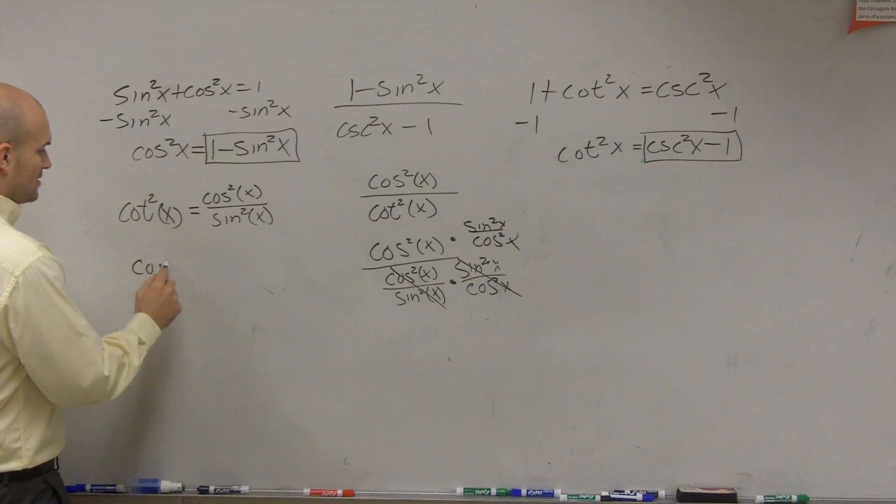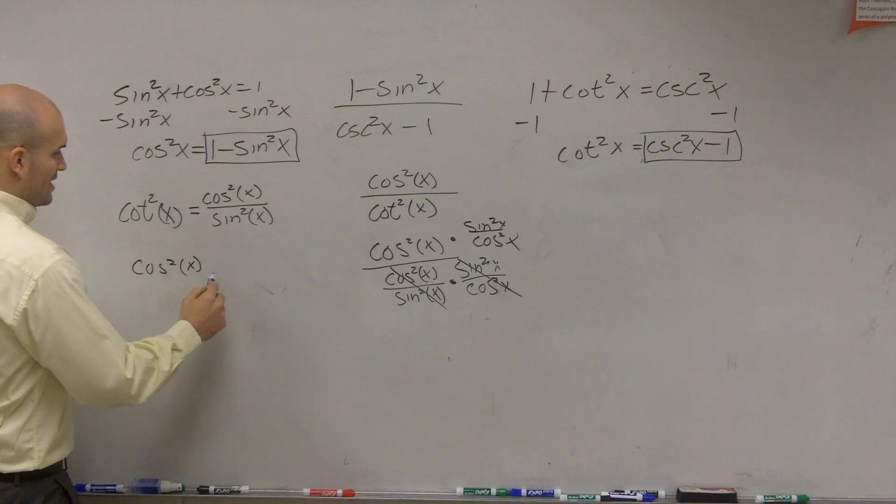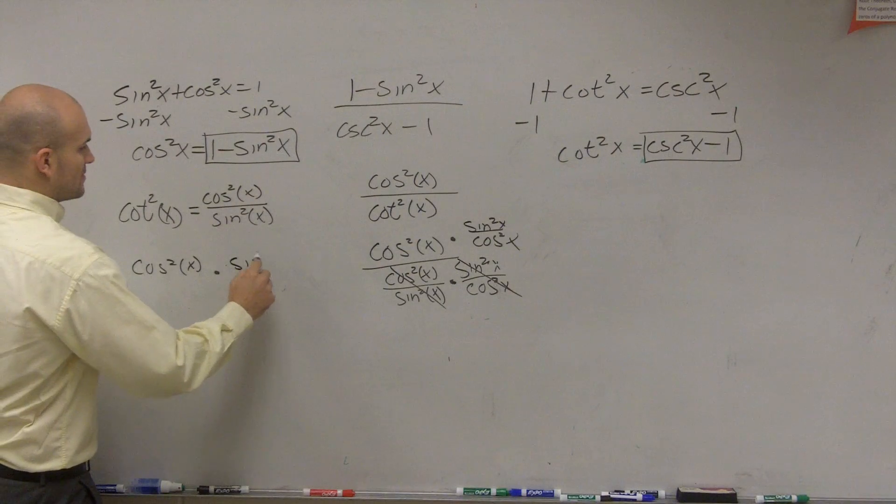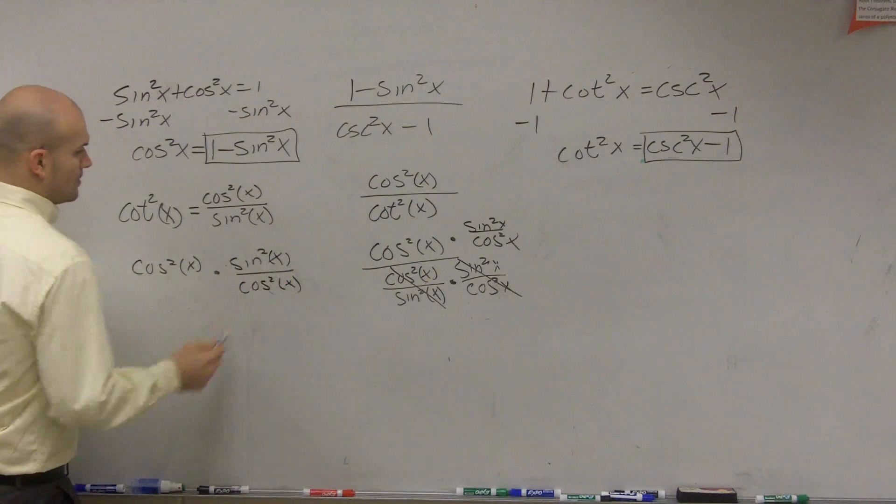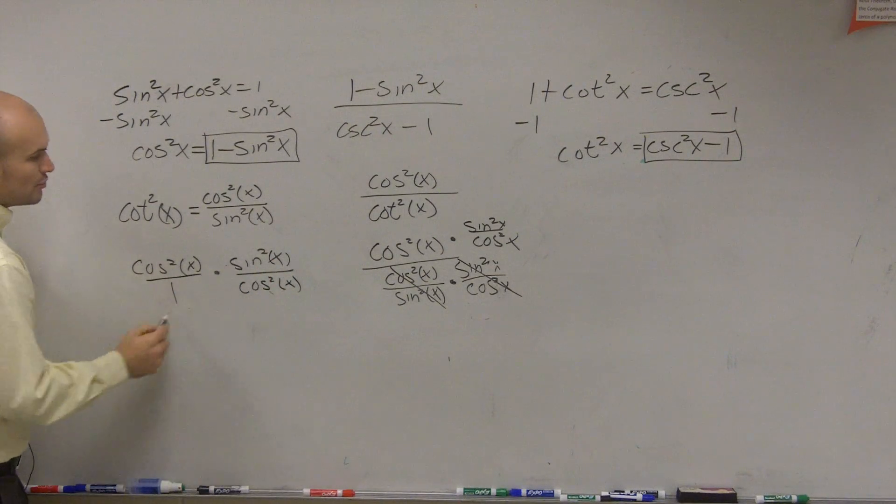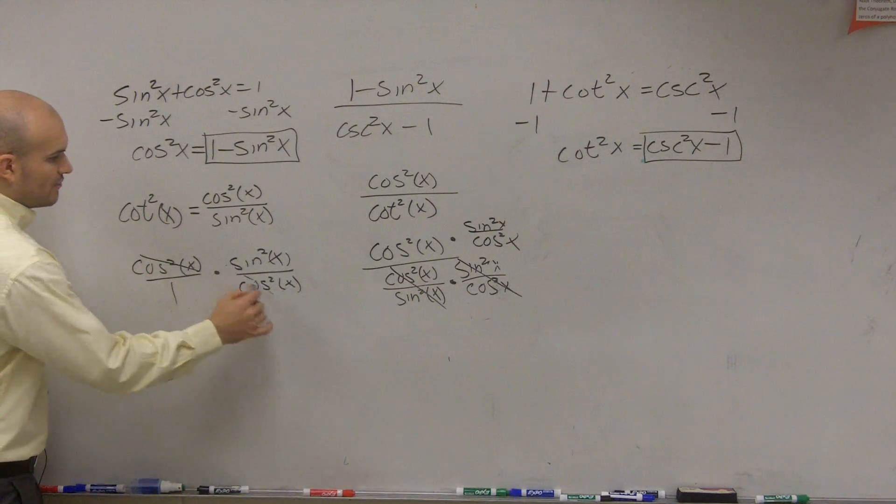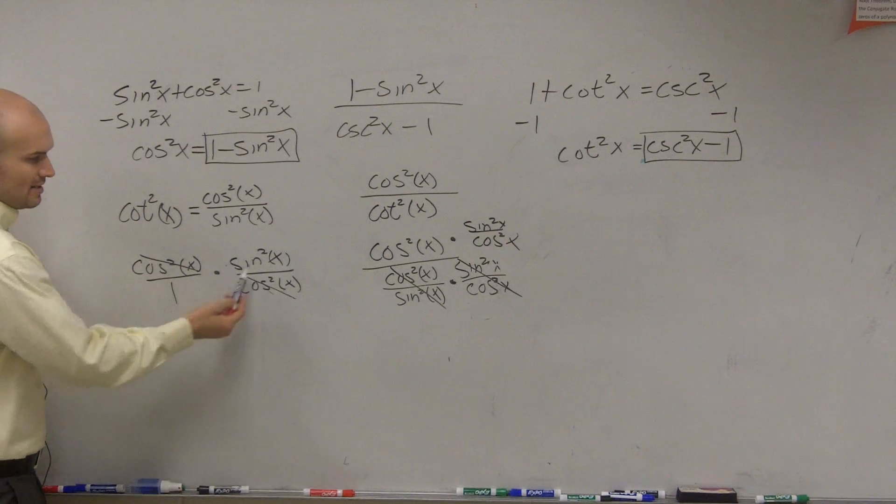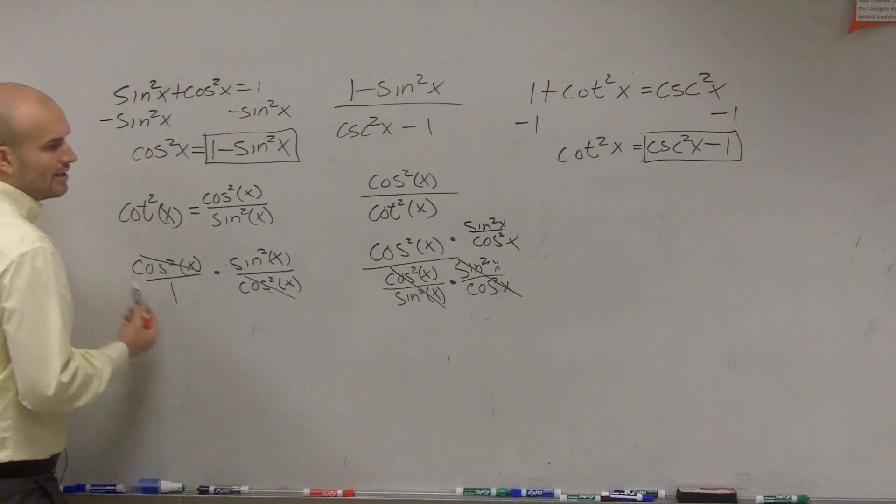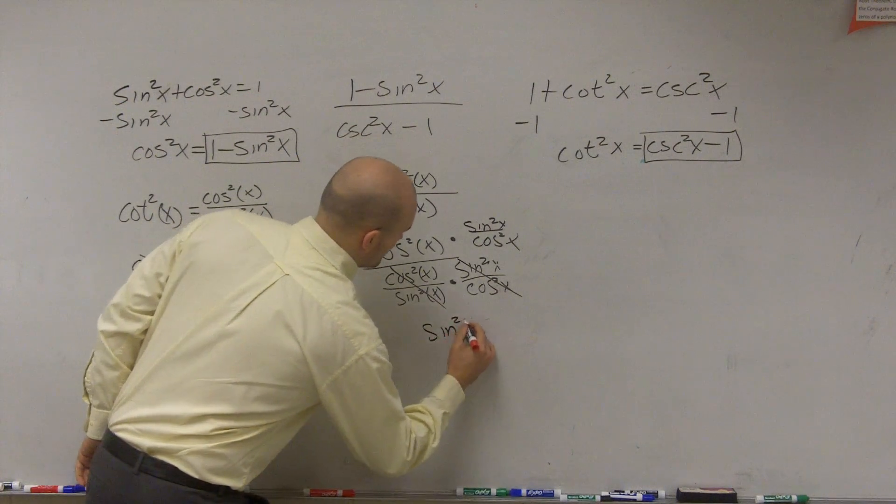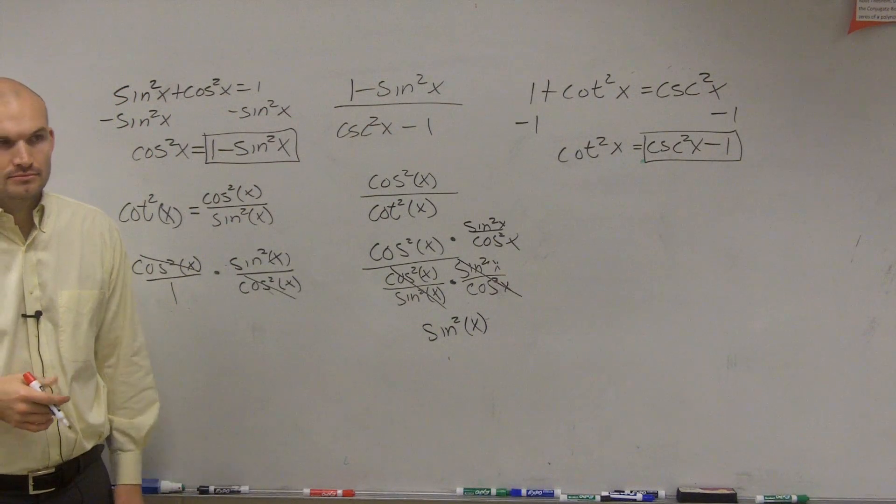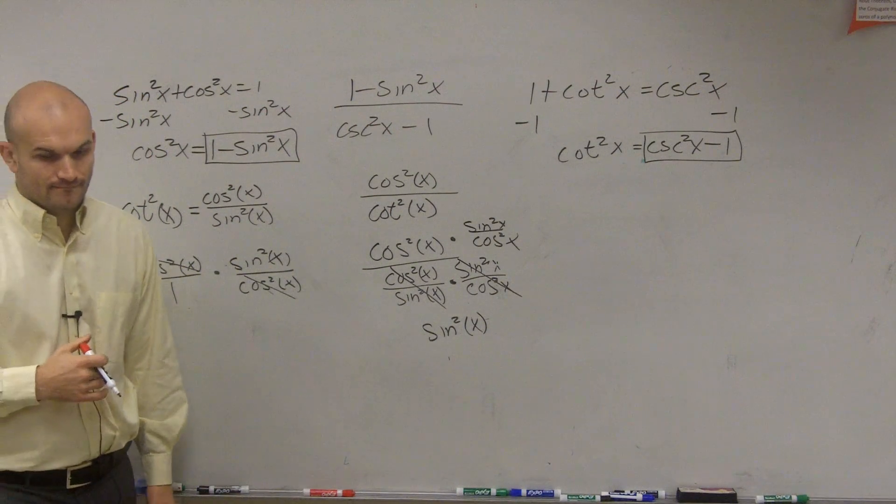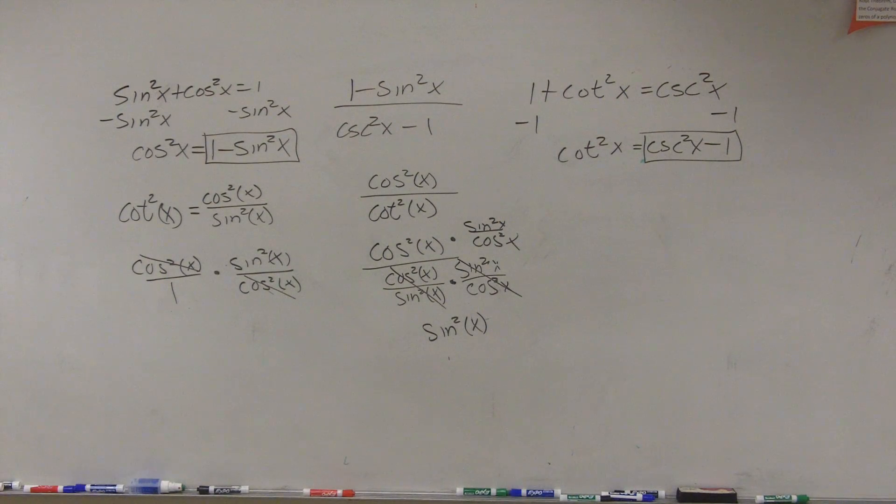Therefore, what this really looks like, I know I kind of ran out of room, but this really looks like this. Therefore, this is actually in the numerator. So you have a cosine squared in the numerator and a cosine squared in the denominator. Therefore, they're actually going to divide out to 1, leaving you with a sine squared of x. Amazing.